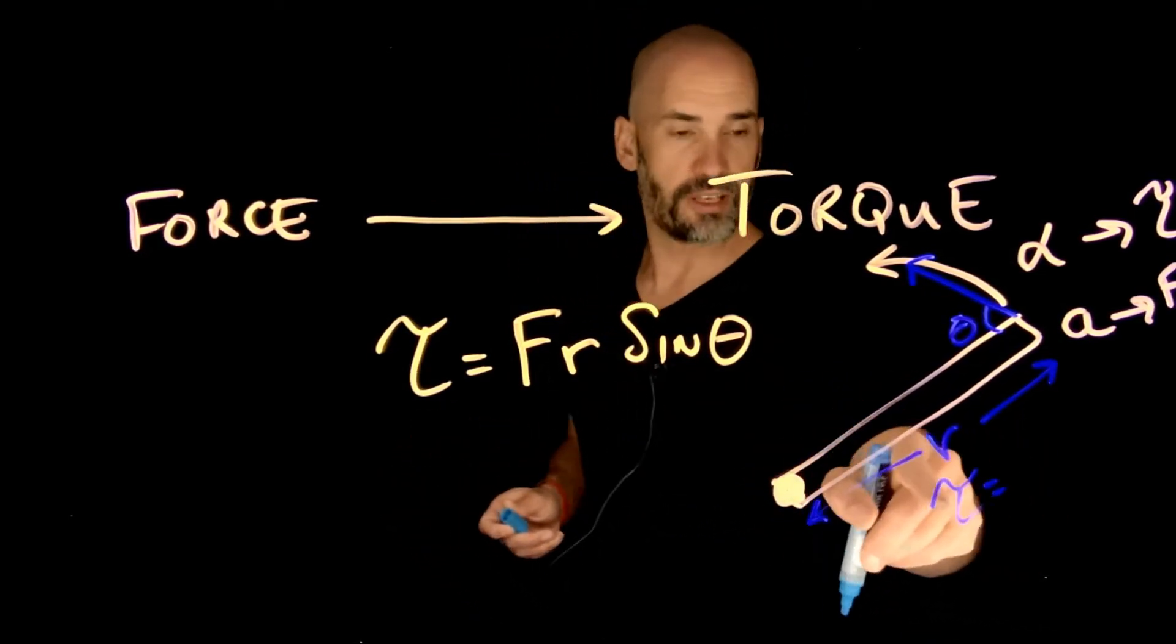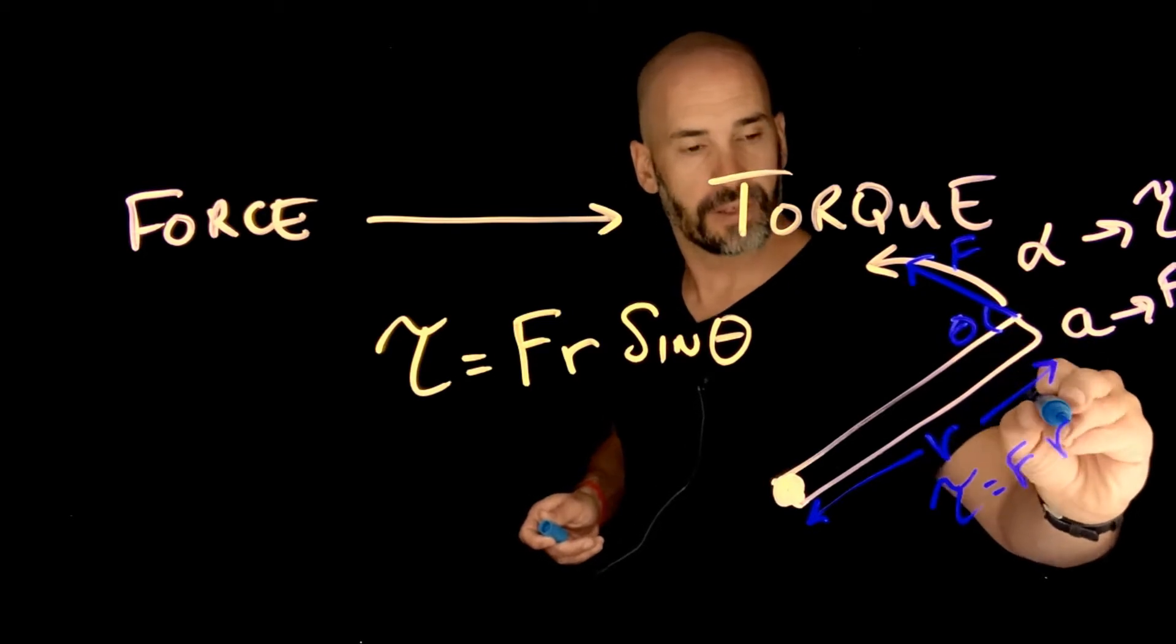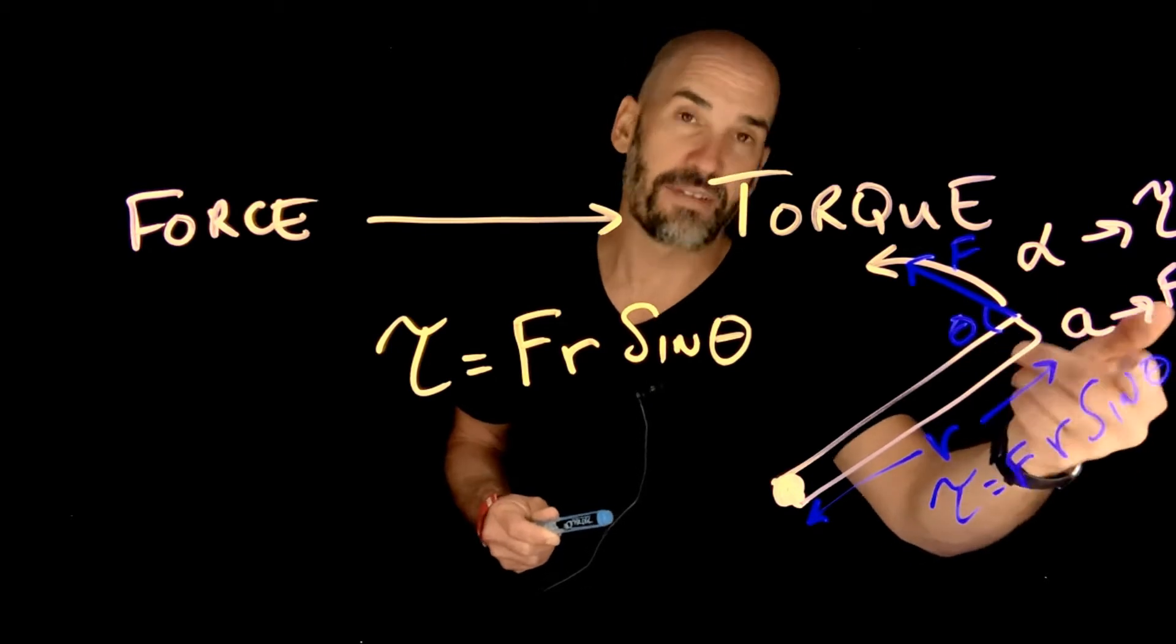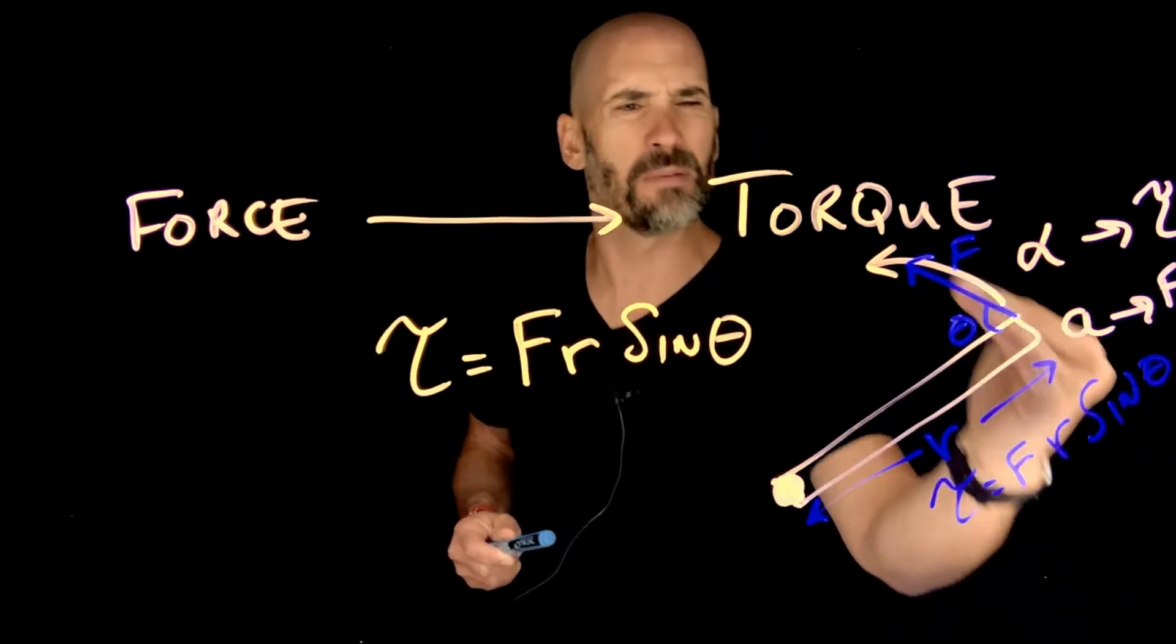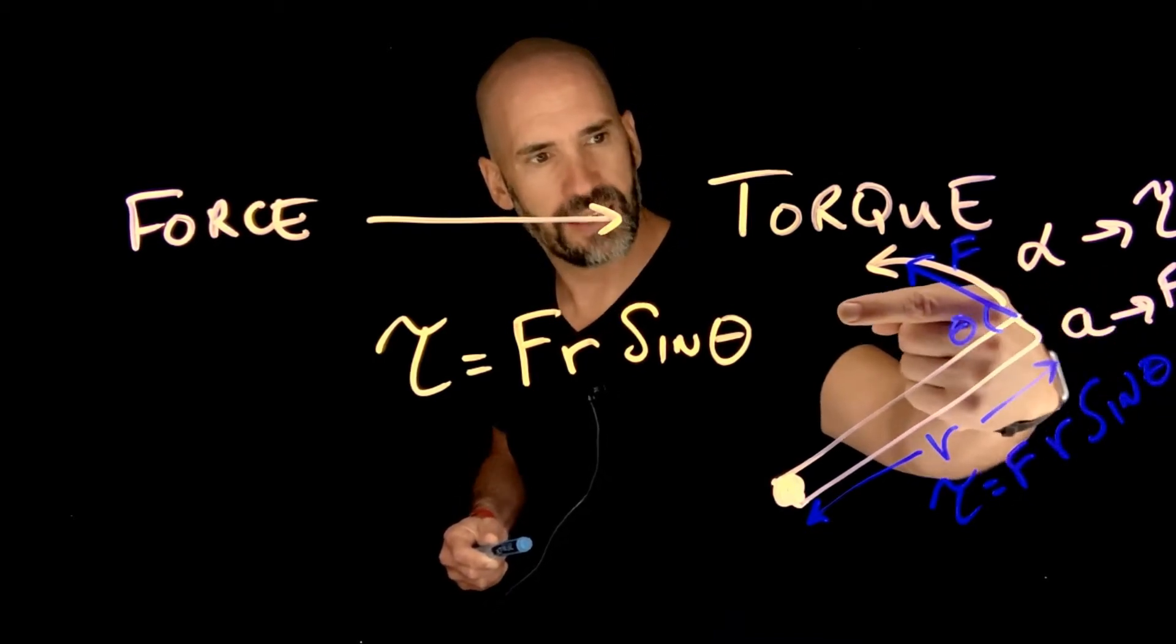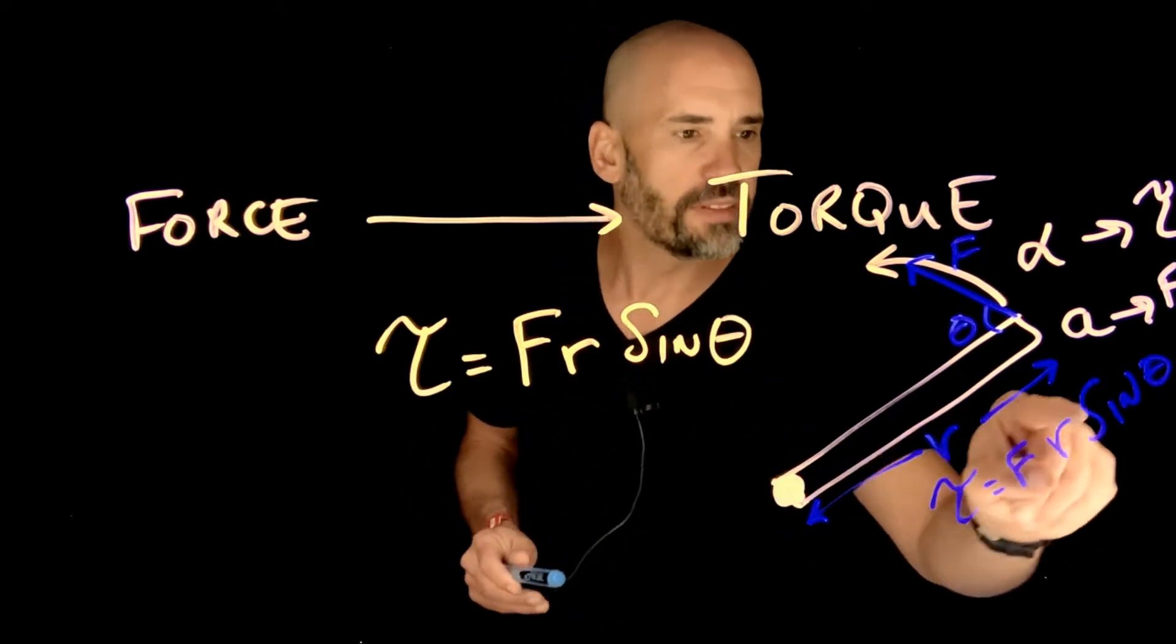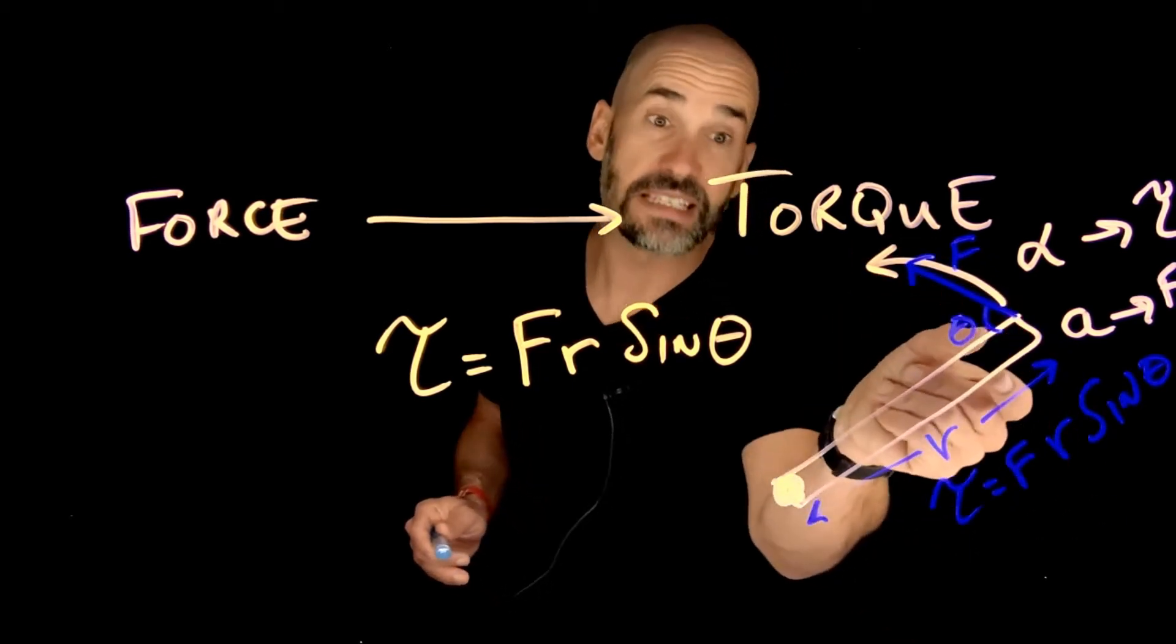I get a torque equal to how strong that force is, how far from the axis I push it, times sine of the angle at which I apply it. Here's the thing: sine of theta is biggest when theta is 90 degrees, which makes sense because if I'm pushing this at a 90 degree angle I'm getting the most bang for my buck. But if I'm pushing at a smaller angle, not all of that force is used to actually rotate it - some of that force is directed in just pushing the blade against the hinge, not very useful. So this sine theta is my way of saying how much of the force that I'm applying is actually perpendicular to the blade and is actually getting it to rotate.